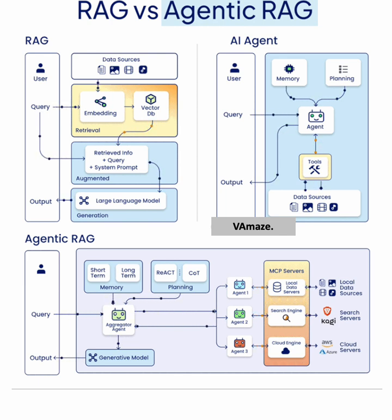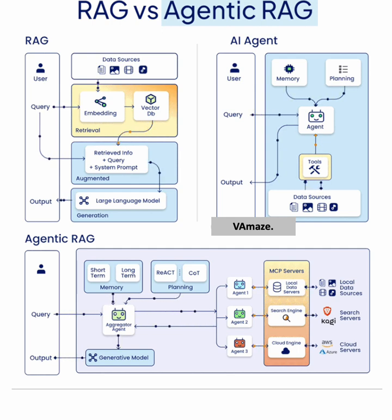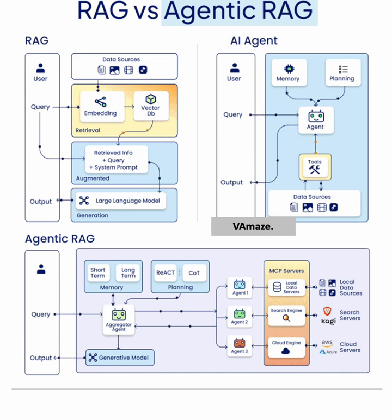In summary, while RAG focuses on augmenting generation with external data, Agentic RAG adds layers of intelligence with memory, reasoning, and dynamic planning, offering a more advanced framework for complex, real-time problem solving.